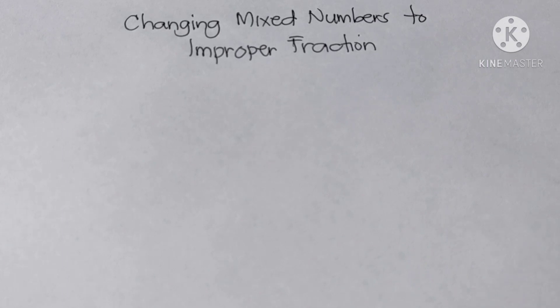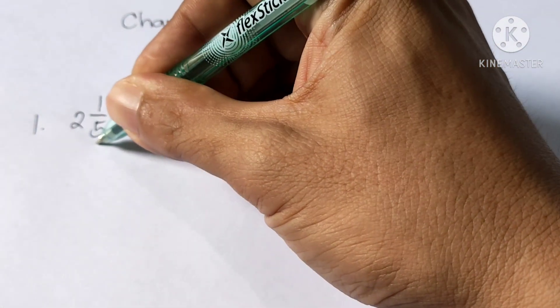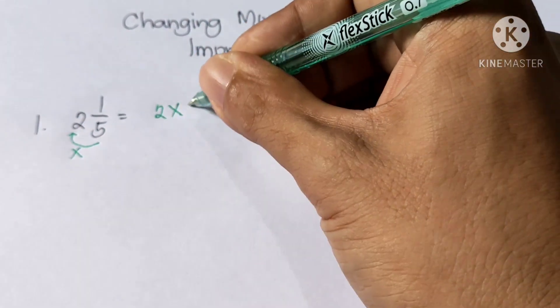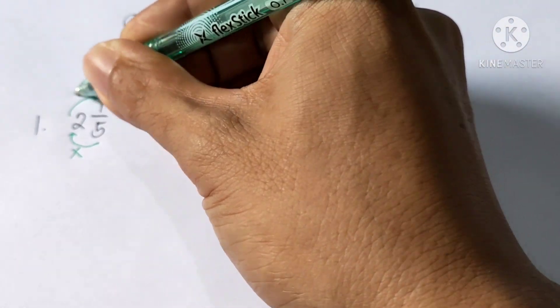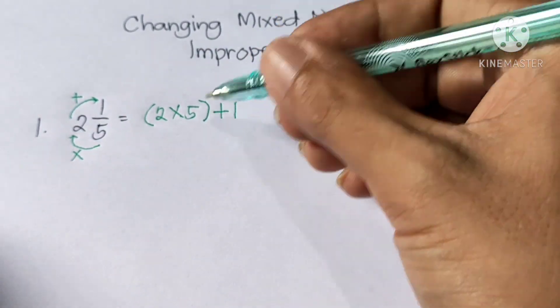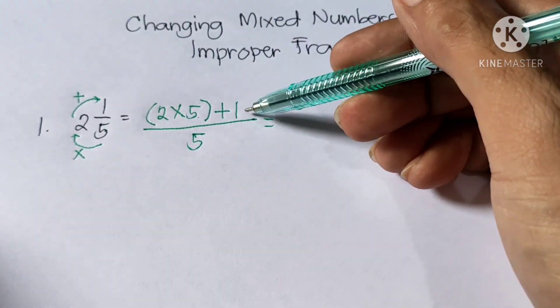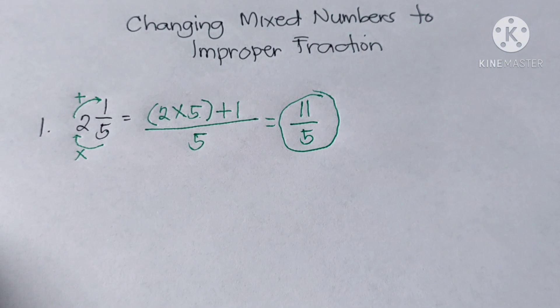This time, we are going to change mixed numbers to improper fractions. Example number 1: 2 and 1/5. First step, multiply the denominator by the whole number: 2 times 5. Then add the numerator: plus 1. Last step, copy the denominator, which is 5. So, 2 times 5 is 10, plus 1 is 11, over 5. The answer is 11 over 5.